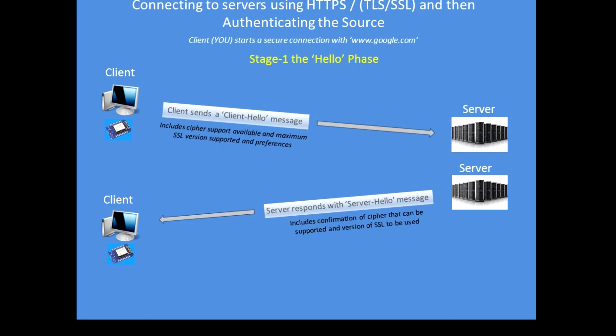To begin the secure connection, the client starts by making a connection to the server with a client hello message. That message contains details about the client's ability to support various ciphers, which SSL version it can implement, and how many bits of encryption. The server then responds with its ability to support the requested encryption ciphers and confirms which version of cipher and SSL should be used.